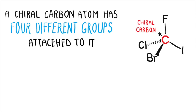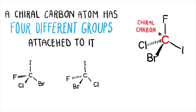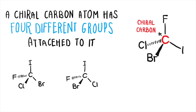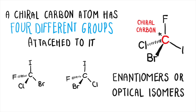It's possible to arrange the groups in two different ways around the carbon atom so that two different molecules are made. These molecules are called anatomers or optical isomers.